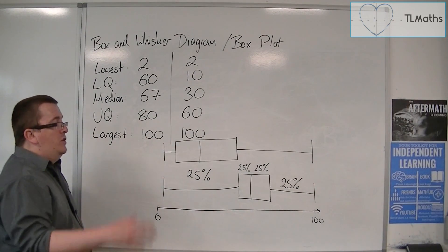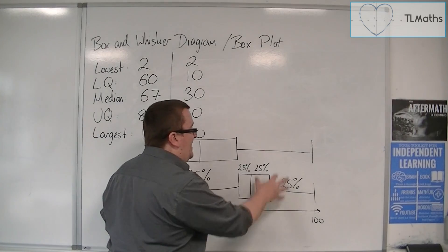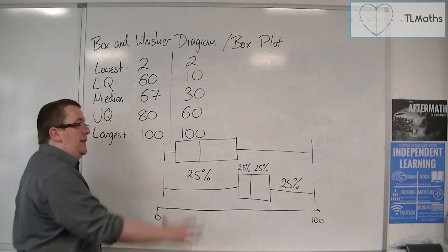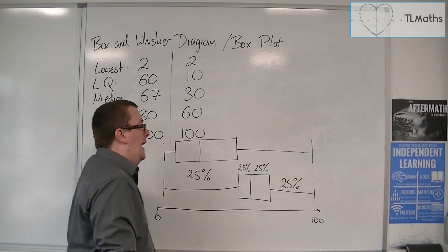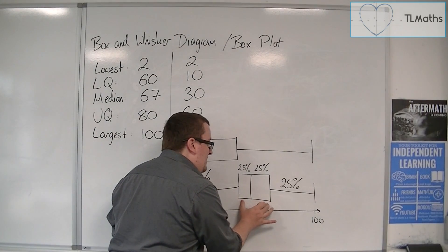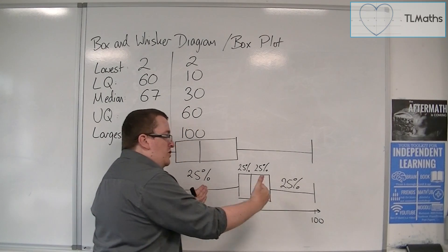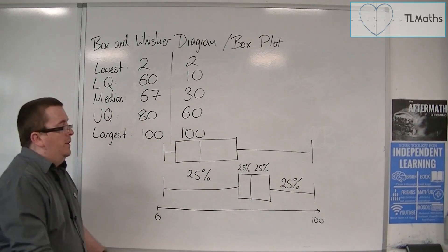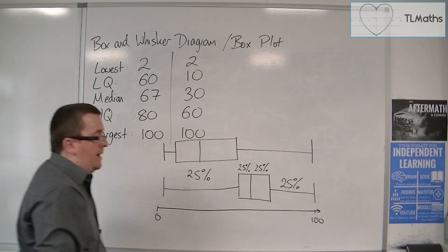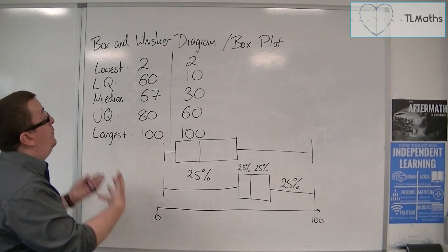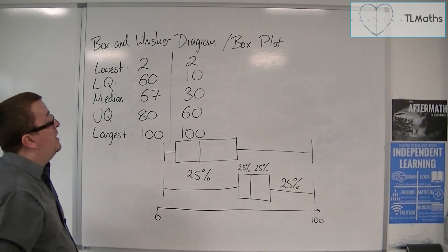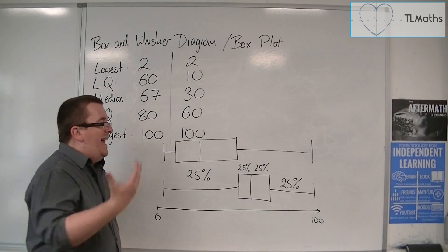the majority of the students did better in class B than class A, because the median is larger and there is less consistency in the sense that there is a smaller box for class B. They are less spread out. And so that is how we can work with box and whisker diagrams or box plots and compare them.